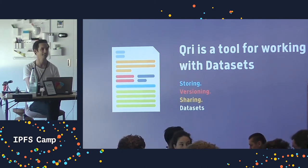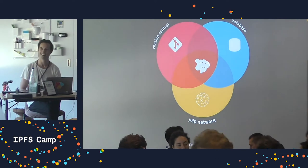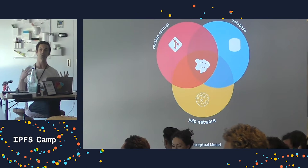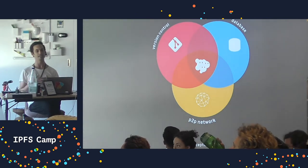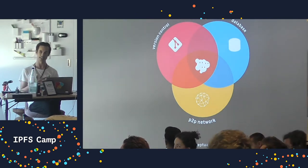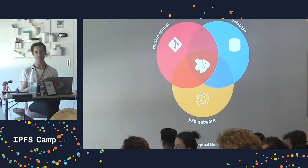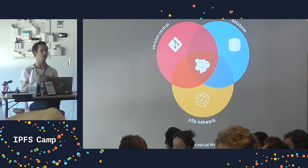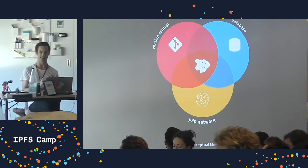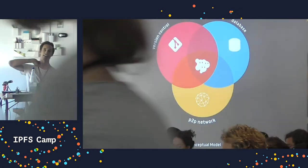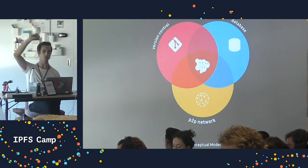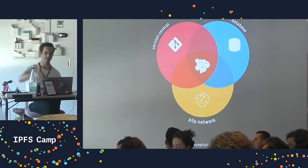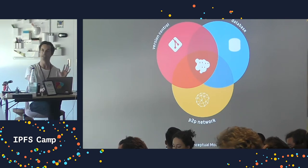To give you a mental model: Qri is a new thing but also a combination of old things. We see it as three things venn-together: it's a version control system, it is a database, and it is a peer-to-peer network - all at the same time. This is all inside the context of datasets as your document model. When you're working with Qri you just think about datasets; you don't actually worry about these underlying systems.